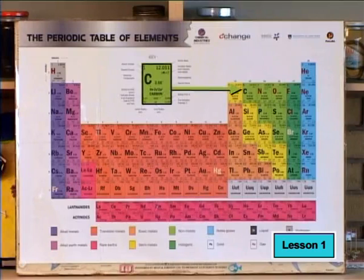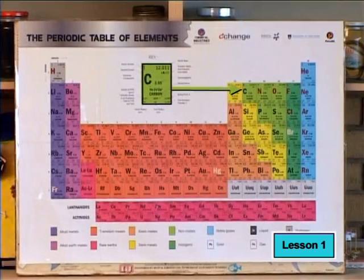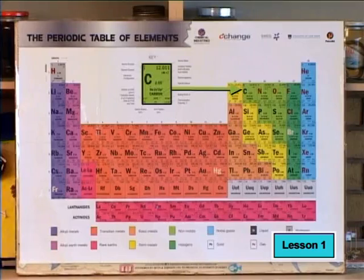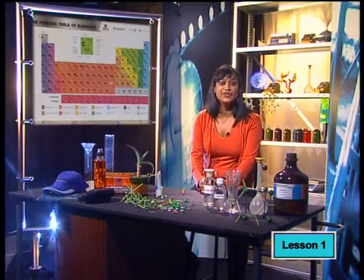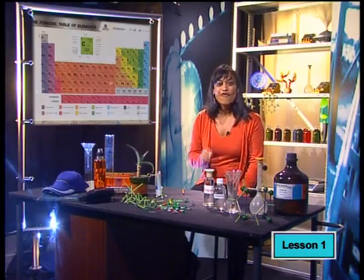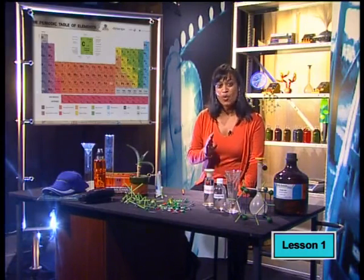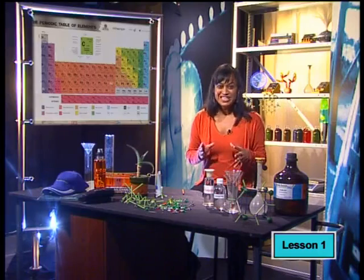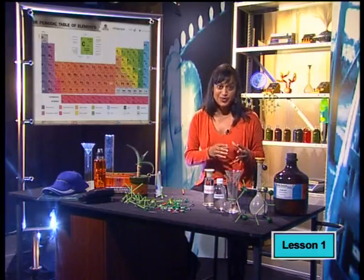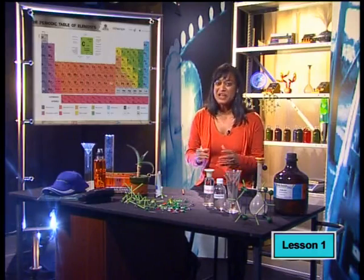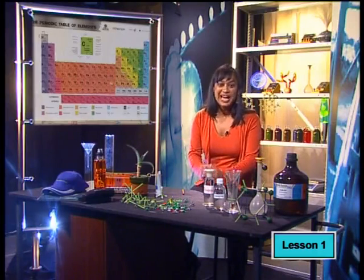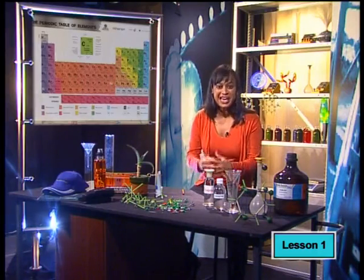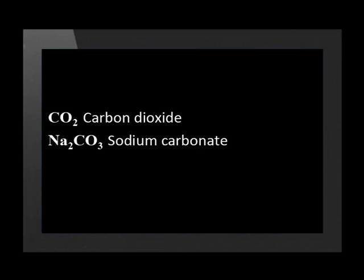We find carbon in the middle of the second period on the periodic table. It is in group four, and this means that carbon has four valence electrons. This also means that for carbon to have a complete set of eight electrons, it must make four electron pairs or bonds. These bonds are with other atoms or even other carbon atoms. This is the reason why organic molecules bond and behave the way they do.